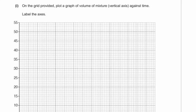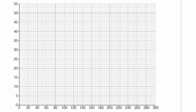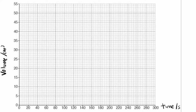On the grid provided, plot a graph of volume of mixture on the vertical axis against time, and label the axes. The x-axis is time in seconds, and the y-axis is volume in centimetres cubed. On the y-axis, every small square is 1 centimetre cubed. On the x-axis, every 5 small squares is 20 centimetres cubed.